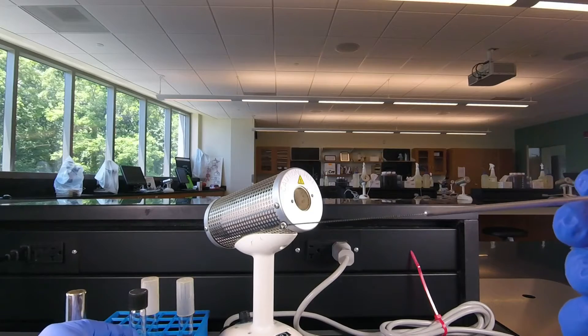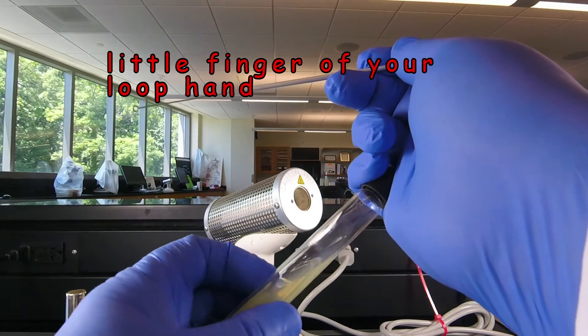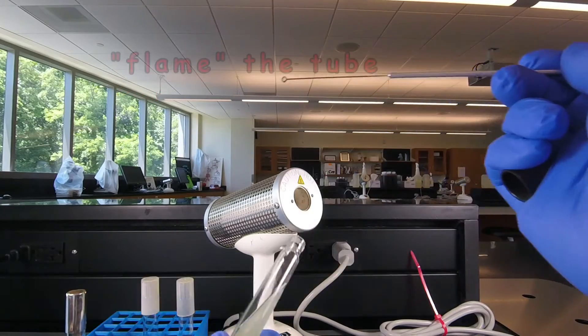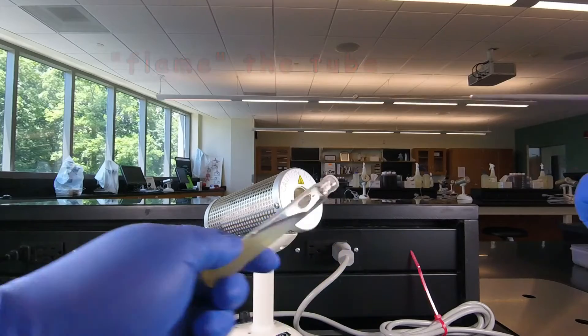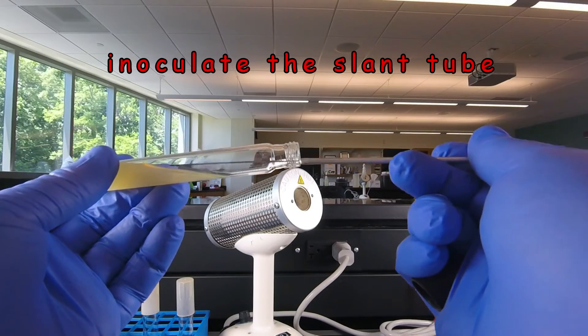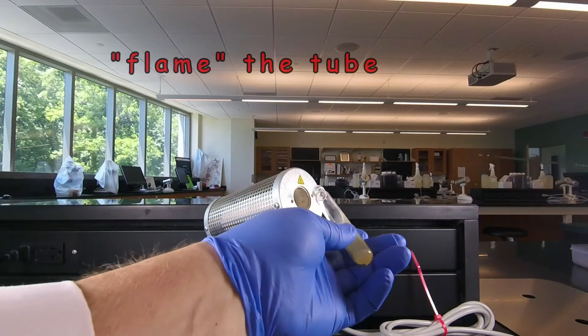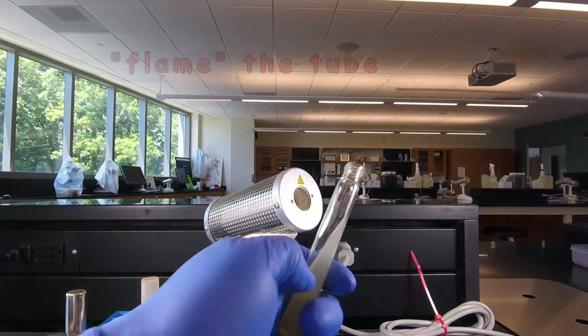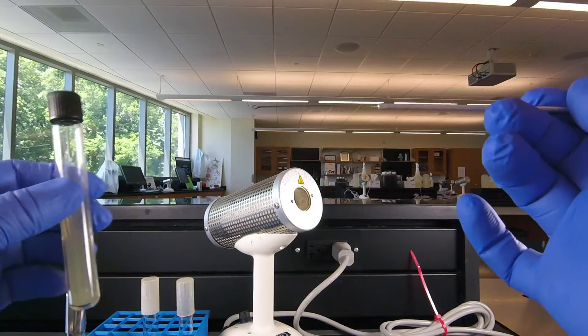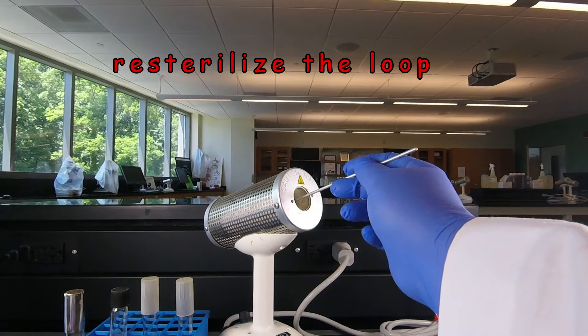We're going to streak it on a slant tube. So once again we grab the cap in the little finger of the loop hand and we unscrew it. This is a screw top tube. We flame the tube for three seconds. We're going to hold it so the agar is down flat and the loop is flat. We're going to start at the bottom of the streak and just do a little squiggle as we pull it out. Then we flame the lip of the tube for three seconds. We screw the cap back on, keeping the cap a little bit loose so that air exchange can occur. And of course we burn off any remaining bacteria on the Bacto incinerator by putting it in for ten seconds.